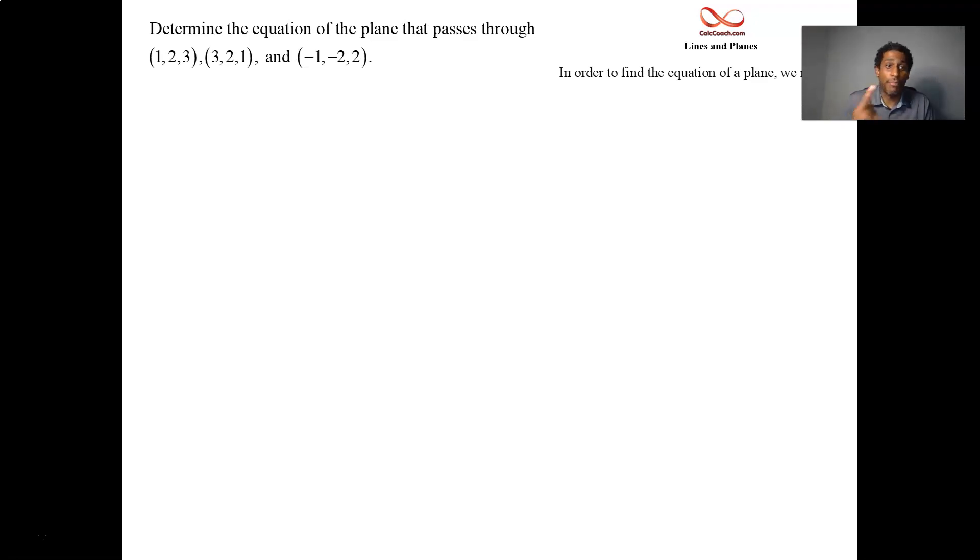To find the equation of any plane you're going to need a point that's on the plane, you have three to choose from, pick one, and you're going to need the normal vector to the plane. And so the normal vector to the plane is going to be a vector that's orthogonal to every vector that's in the plane. You don't have any vectors that are in the plane, but you can go get them though.